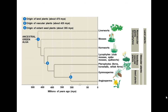From a timeline perspective: land plants showed up first, then about 50 million years later vascular plants appeared, and about 120 million years after that we started seeing the plants that exist today — the gymnosperms and angiosperms, the seed plants.